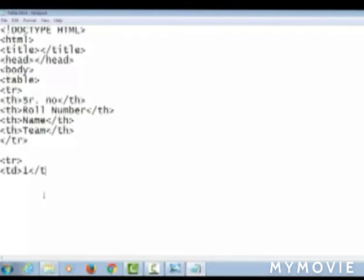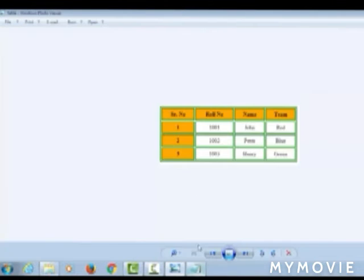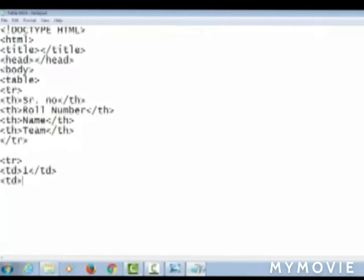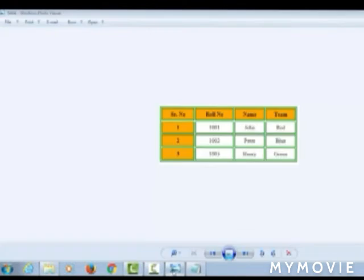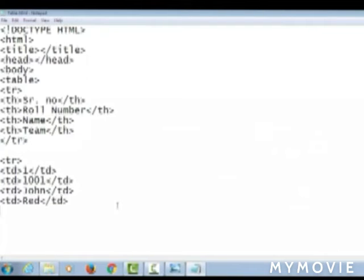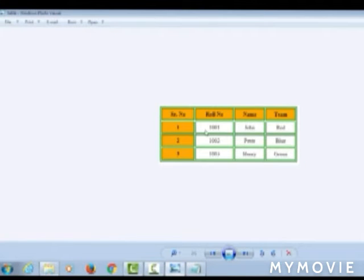The difference between th and td tag is th is the table heading and td is the table data. Now I am writing the data in this table. That is 1, then roll number 1001, then another td is John, the name, and the team is red.